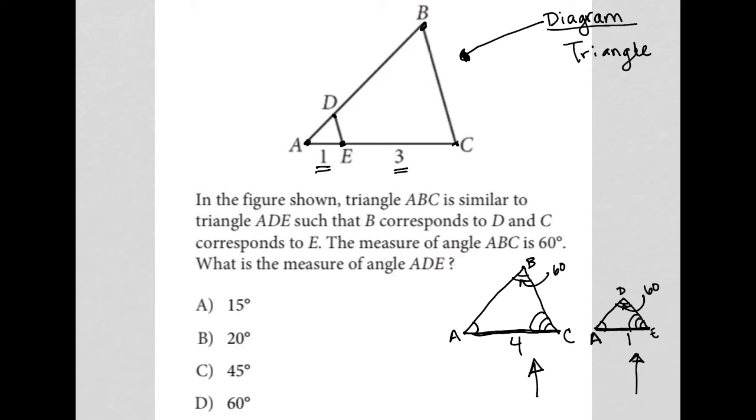What is the measure of angle ADE? ADE. Oh, okay. So much simpler than I thought this was all leading to. So ADE has to also be 60, right? Because that is the definition of a similar triangle. As long as we've drawn these triangles in the right orientation, and even if we hadn't drawn them in the right orientation, the question goes on to tell us that B corresponds to D, right? And C corresponds to E.